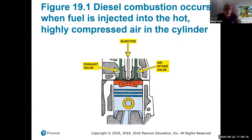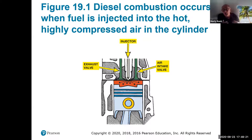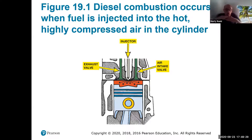One of the biggest differences between gasoline and diesel is the compression ratio. Gasoline compression ratios could be around 8.5 to 12.5 to one, whereas diesel you could have 18, 23, even 25 to one. In other words, we're going to get a really tight squeeze.